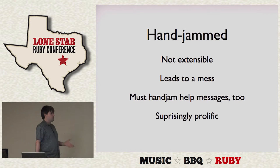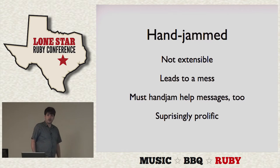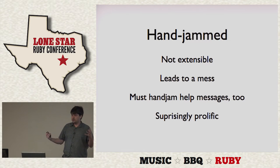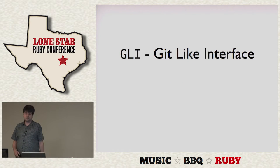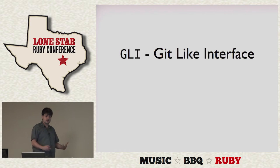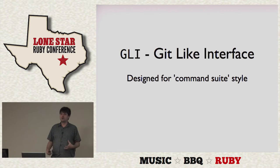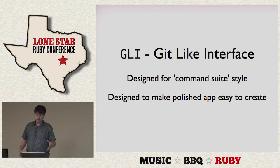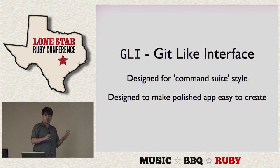I needed to make a command suite application way back when. I looked around and found a lot of this hand-jammed code, and I didn't like that because I'm lazy and I wanted it to be a really awesome app. So I created a gem of my own called GLI, which stands for Git-like interface, because that's what made sense to me. It's designed to make command suite style applications very, very simple. I wanted the application to be super polished with a really nice help interface, without me having to do a lot of work.